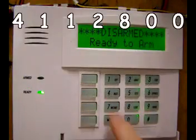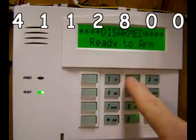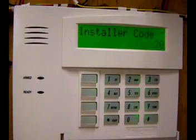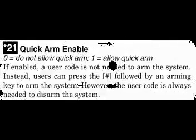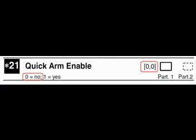Go ahead and enter program mode: 4-1-1-2-8-0-0. The first field you'll see is field 20. I covered this in great detail in Part 9, so we'll move on. Field 21 is quick arm enable. This will greatly simplify the operation of your alarm. Instead of putting your security code in and then arming it, you just press the pound sign and then the arm button. The command requires two inputs — one for partition 1, the other for partition 2. By default, this command is off. To turn it on, simply enter the number 1 into both partitions.